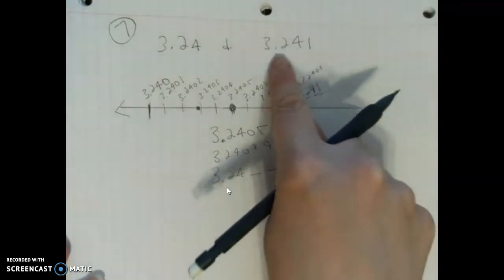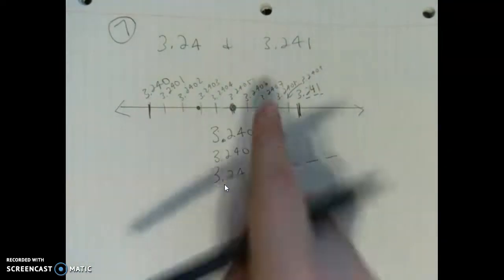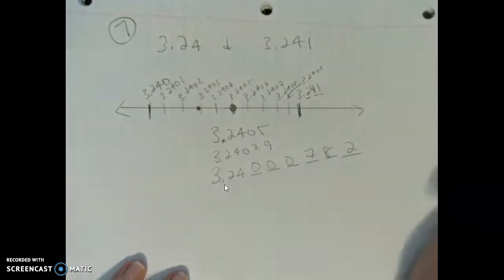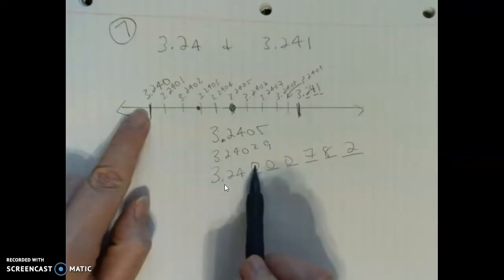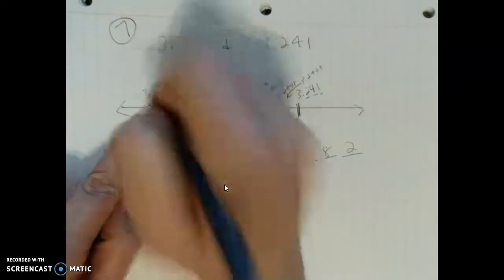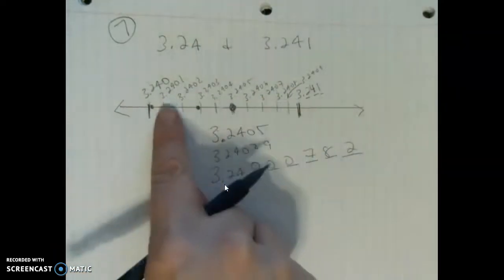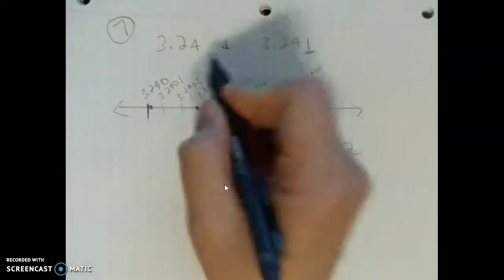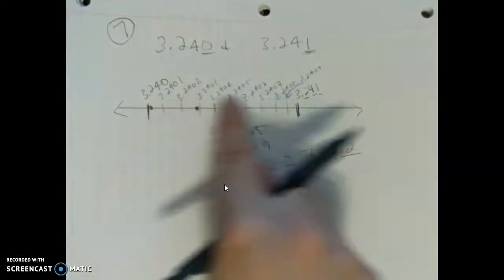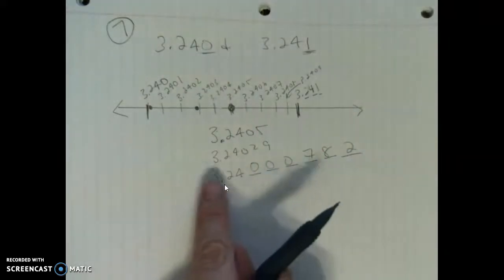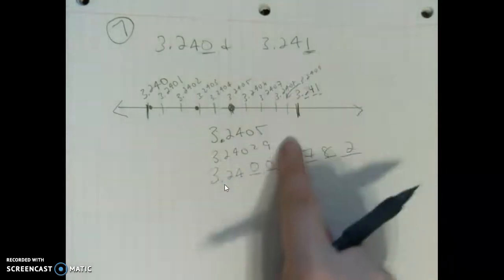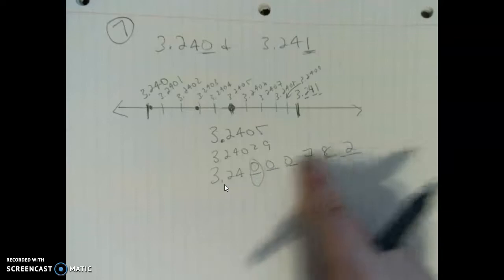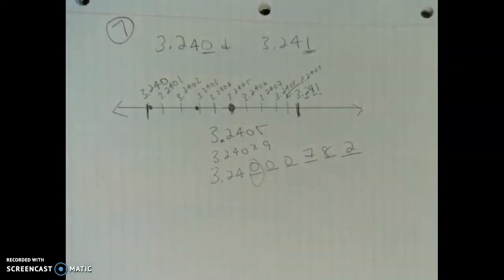There are always infinitely many points because you can zoom in further and further. For example, 3.240782 would be almost on top of 3.240 and still valid. I chose the halfway thousandth tick for simplicity, but any number that is 3.24 followed by a zero and then any digits will be between the two given values. Hope that helps — have a great day!